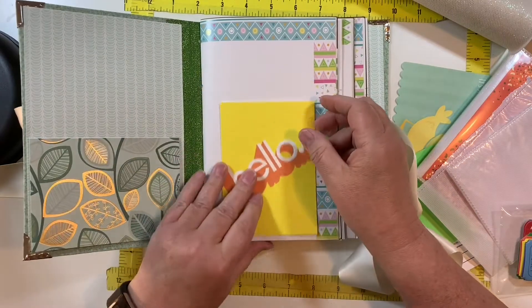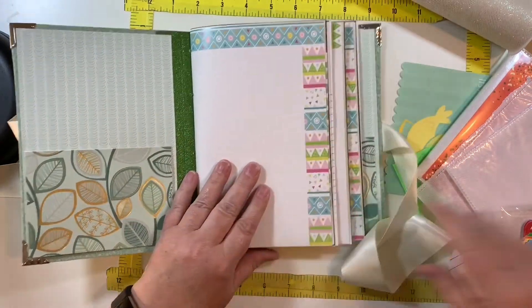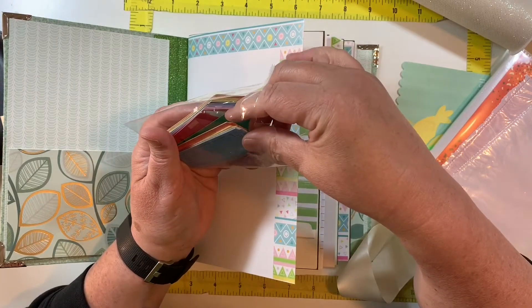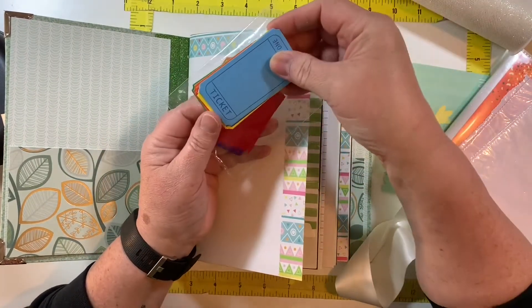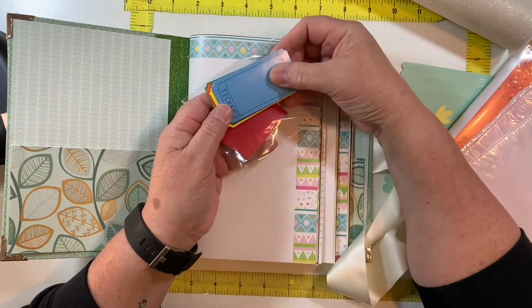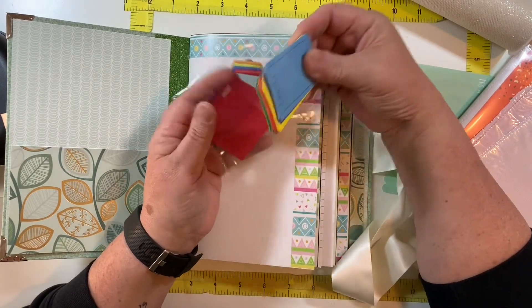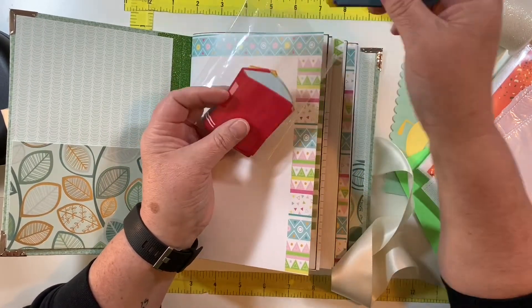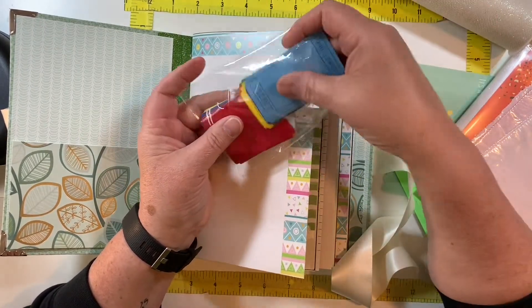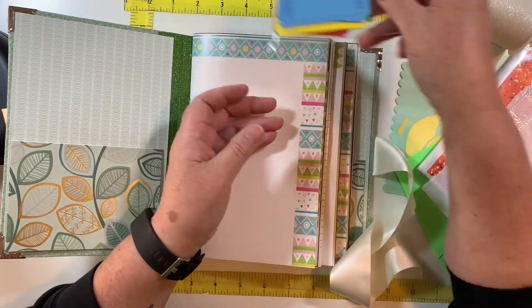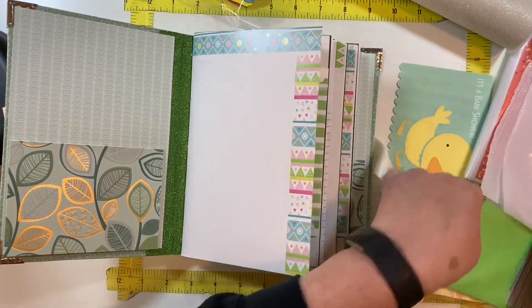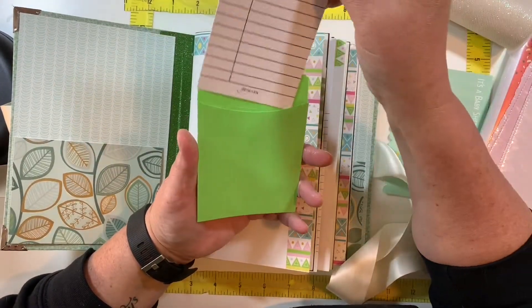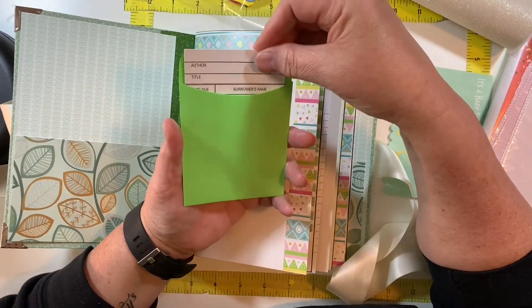These here are little tickets. I either got these at Michael's on clearance or at Target. I'm pretty sure they came from Michael's, though. When Michael's was having their clearance on school stuff last year, summer or the fall. So just tickets to have fun with. This is a library card. I always have library cards. I used to put them in all my journals and I stopped doing that. And I don't know why.